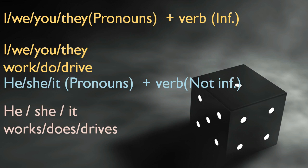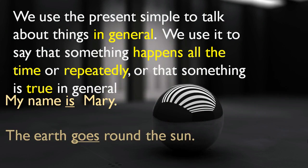But when the subject changes from I, we, you, they — to he, she, it — the verb is not infinitive. Like he works, she works, it works, and so on. Works is not an infinitive verb. Same idea: he does, she does, it drives me crazy, and so on.